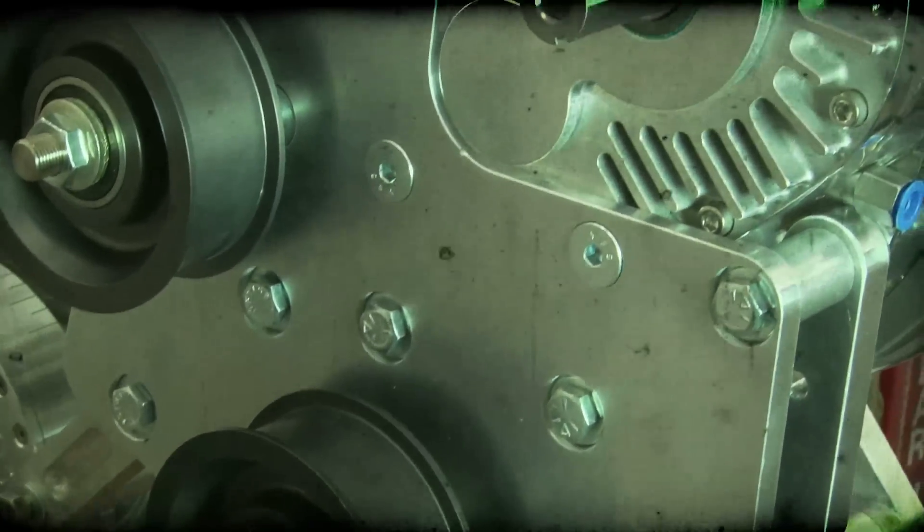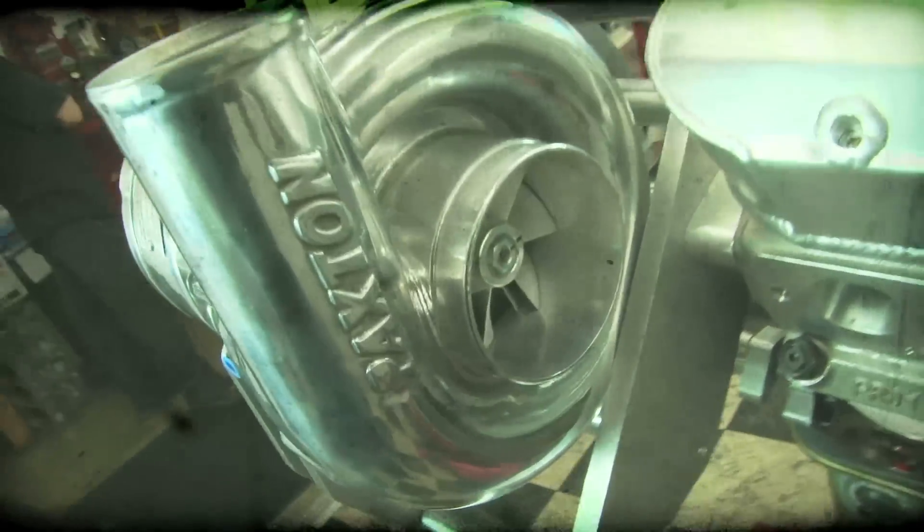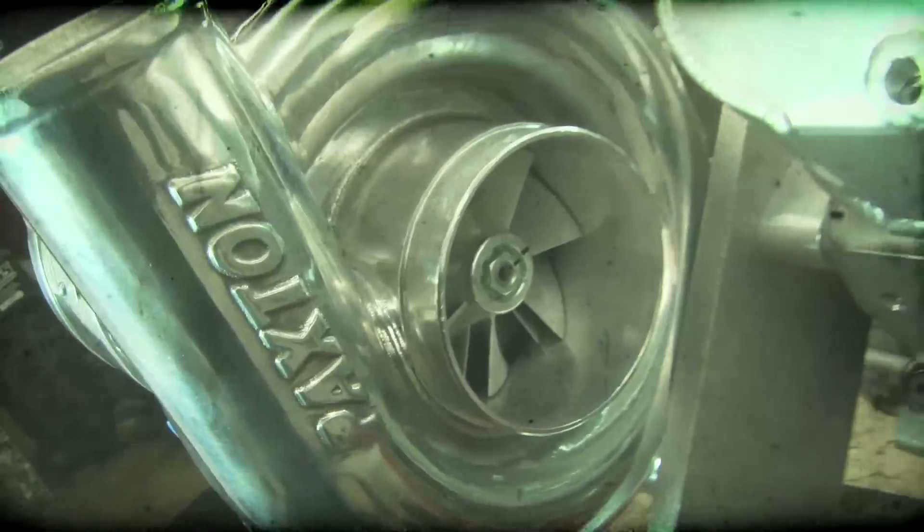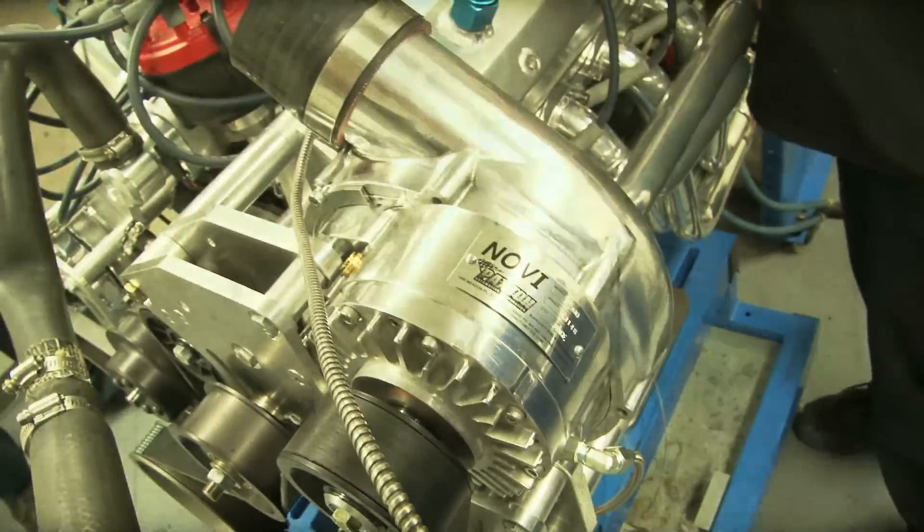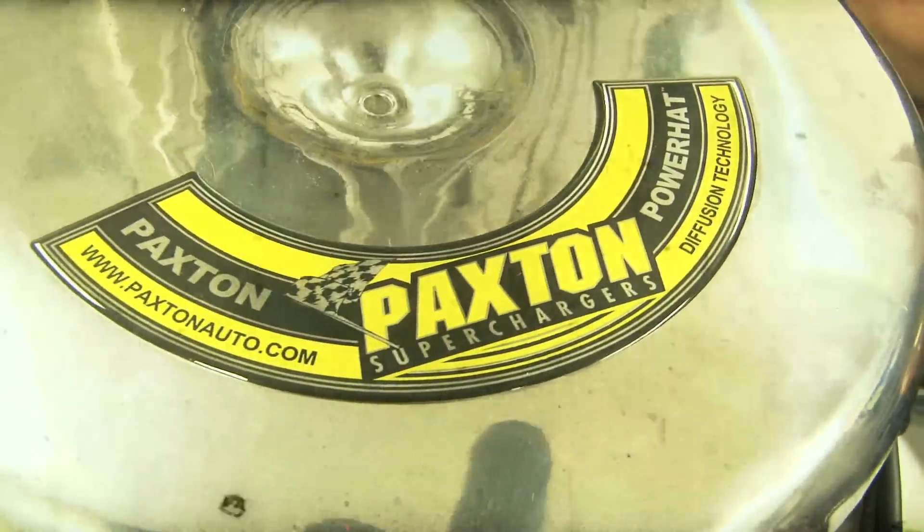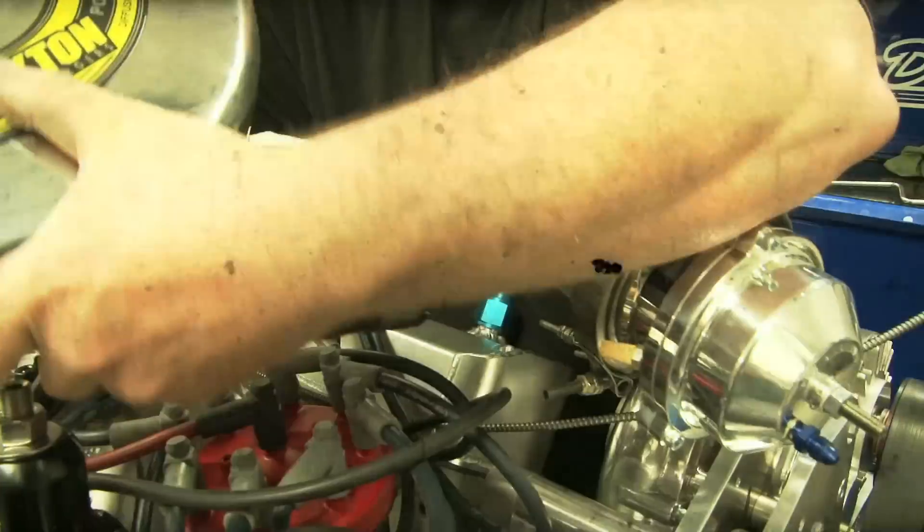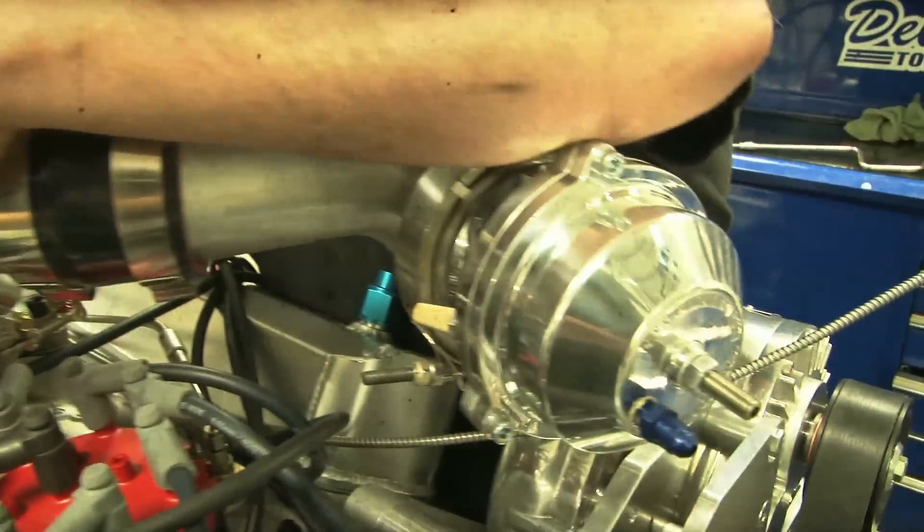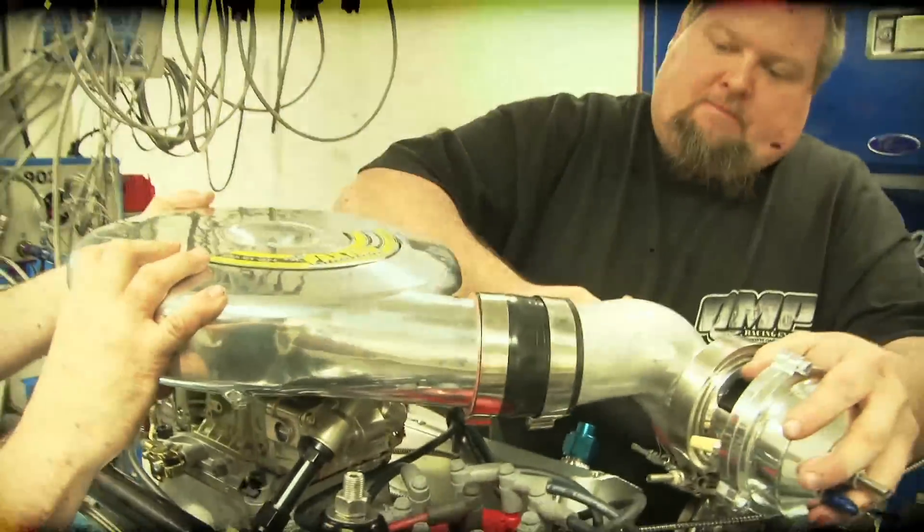For our power adder, we turned to Paxton and their all-new Novi 2500 Supercharger. It features a redesigned compressor wheel that allows it to produce over 1,300 horsepower and 30 PSI of boost. The supercharger feeds Paxton's new power hat, which has been engineered to distribute air evenly across the top of the carburetor. Exhausting the additional off-acceleration boost pressure from the system is Vortex Max Flow BV57 blow-off valve.